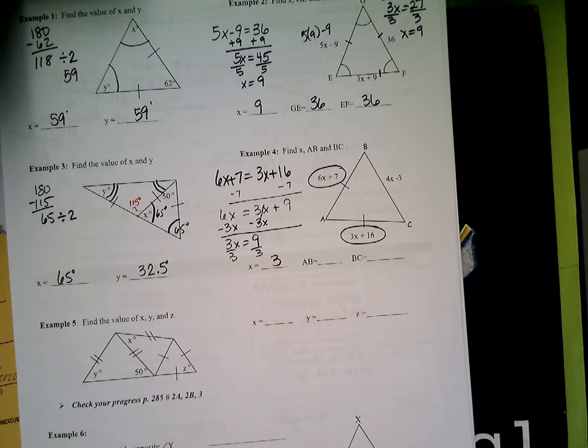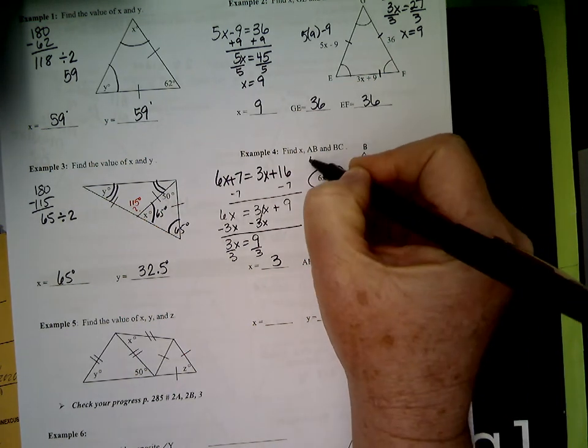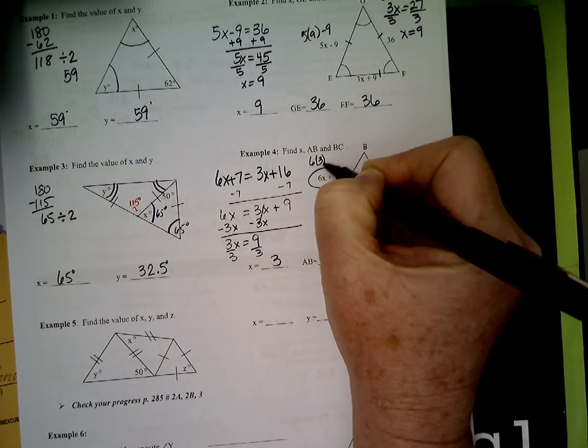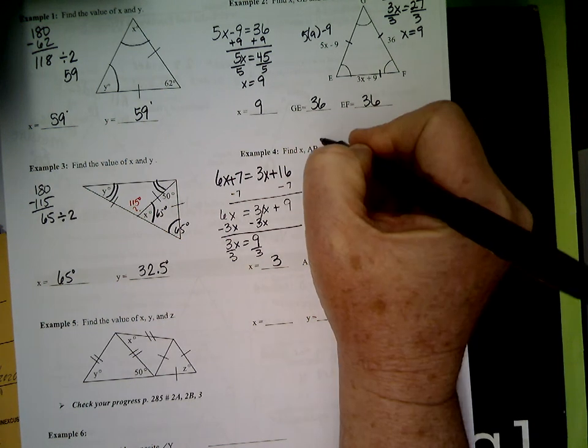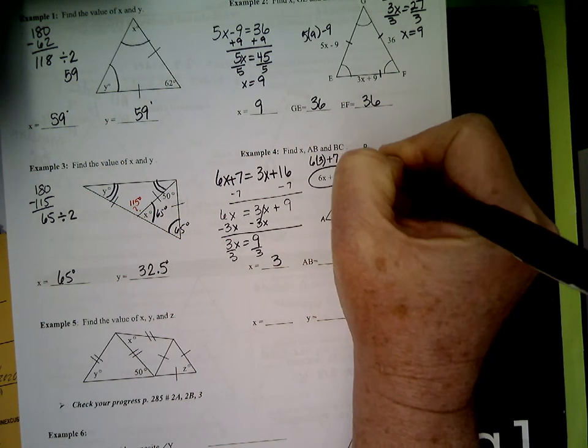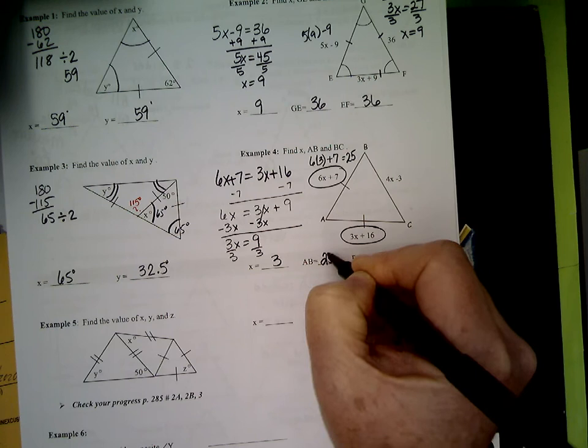Now I've got to go in and find the length of each side. If x is 3, this side is 6 times 3 plus 7. What's that? 25. That's BA or AB. It's 25.